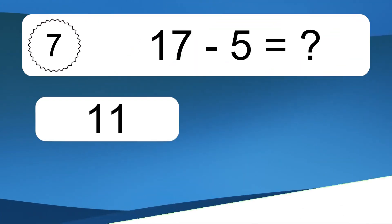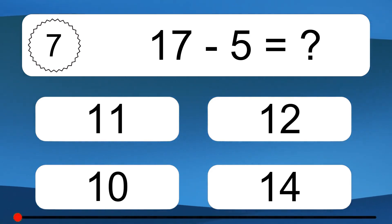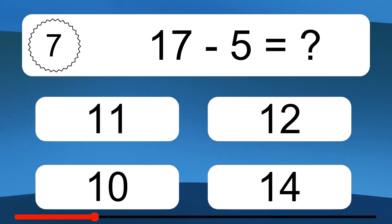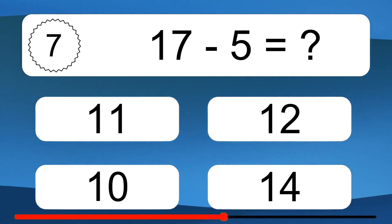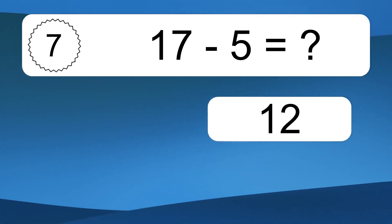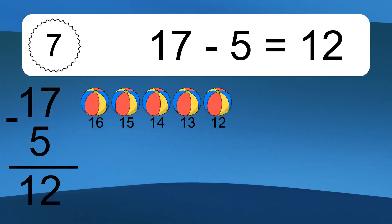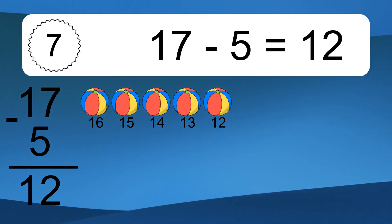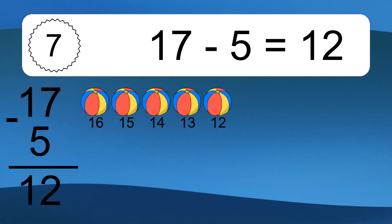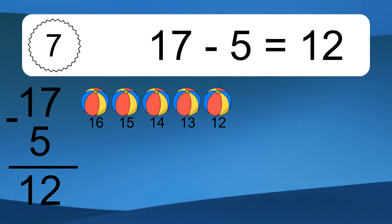17 minus 5 equals what? 17 minus 5 equals 12. Let's count it: 16, 15, 14, 13, 12.